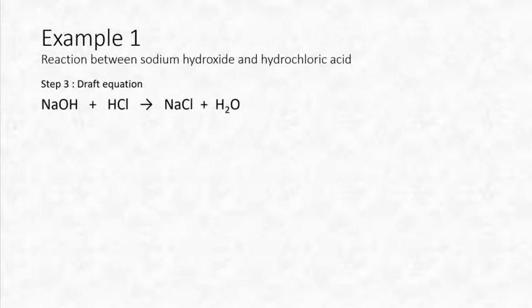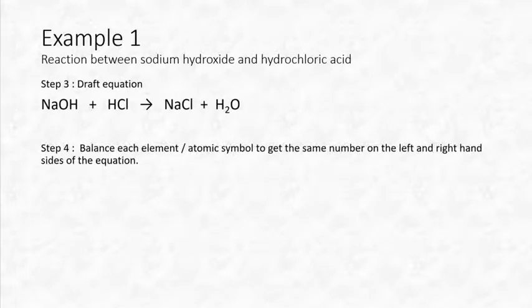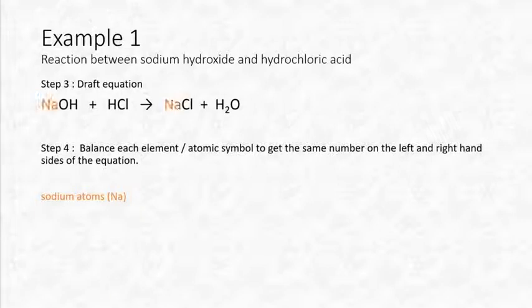Our draft equation is: NaOH + HCl → NaCl + H₂O. Now we balance each element — each atomic symbol — to get the same number on the left and right sides. Let's look at them one by one, starting with sodium atoms.